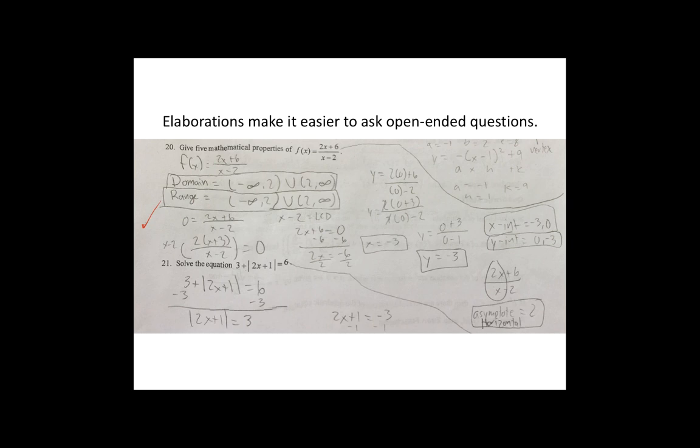So rather than just saying what's the horizontal asymptote of this function or what's the vertical asymptote of this function, I can just say, give me five mathematical properties of this function. And they're used to exploring. And now I'm not asking for the one thing they may not know. I'm asking for them to tell me five things that they do know for sure about this. And that's a very different kind of workspace.